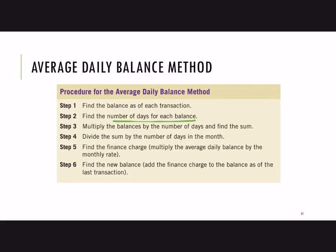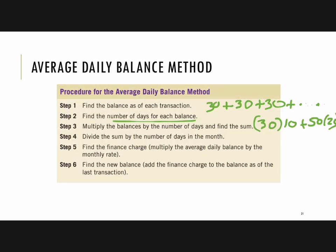We multiply the balance by the number of days and find the sum. For example, if we had a balance of $30 for 10 days, rather than adding $30 ten times, we can summarize and say there was a $30 balance for 10 days — that's $30 times 10. Then maybe there was a $50 balance for the other 20 days, so that's 20 times $50. We add all of that up as part of finding an average, then divide by the number of days in the month.